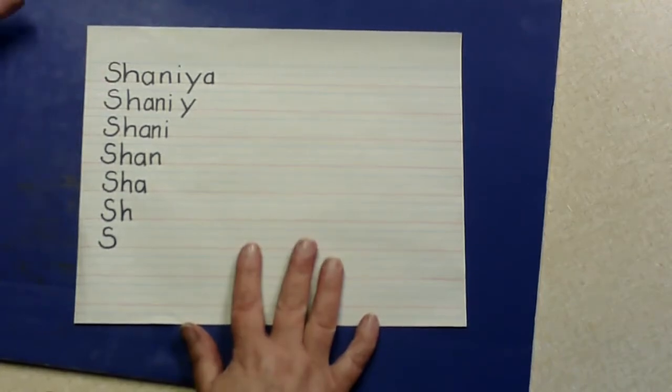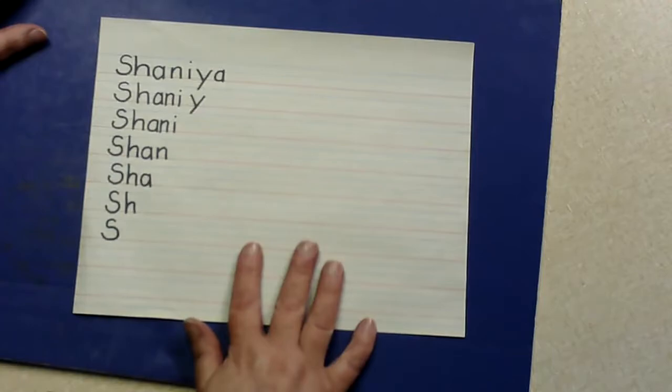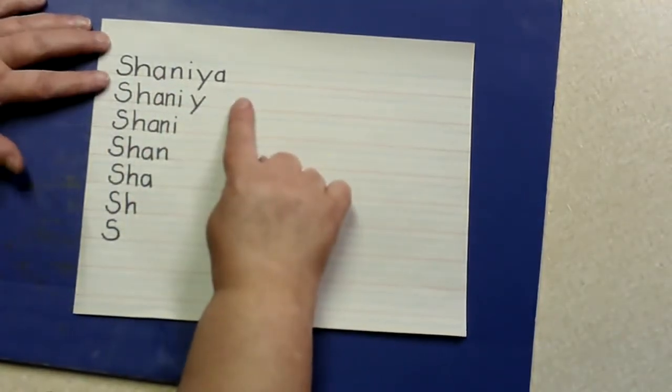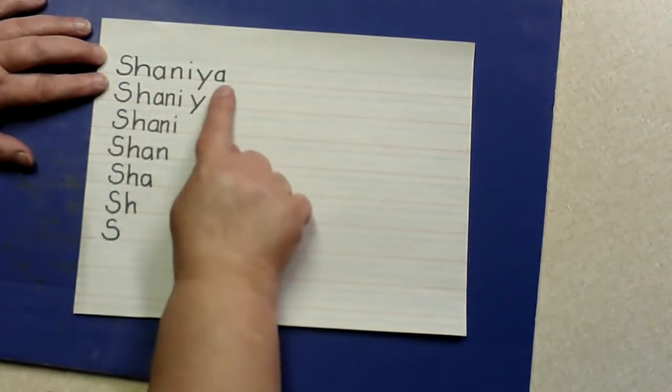You probably want to look up the Zaner Bloser—we'll write that in the comments—letters so that you're forming the letters correctly for them. You're going to write their name.